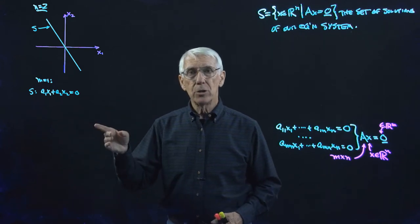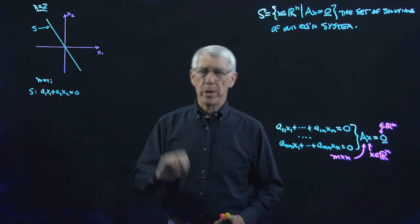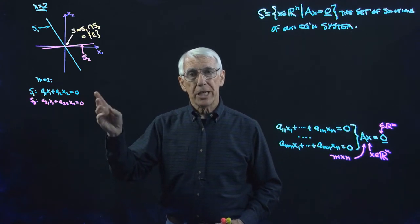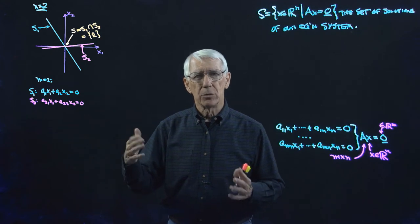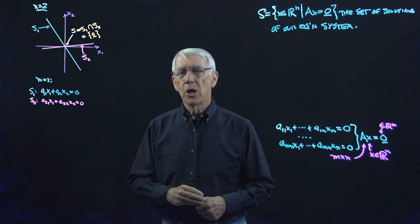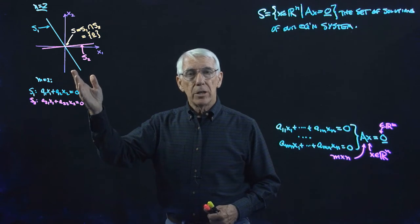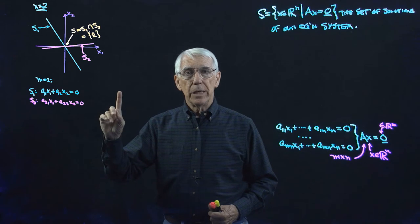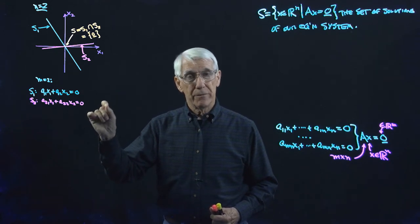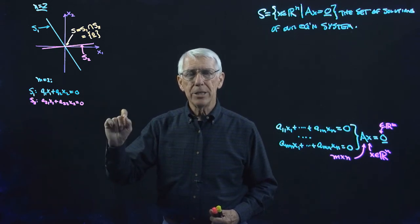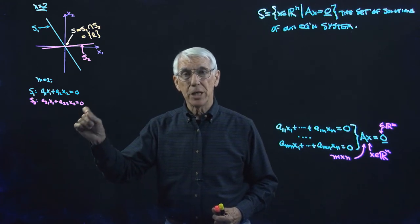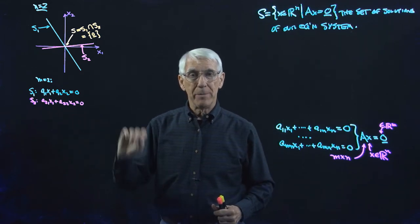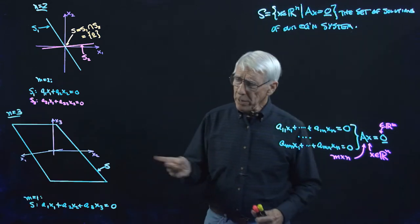What if we're in R2 but M is two? We have a two-equation system, so our set of solutions is the set of simultaneous solutions to the two equations. Each equation is a line through the origin, and the set of solutions will be the set of vectors on both lines — so that's going to be the singleton set containing just the origin in the N equals 2, M equals 2 case.